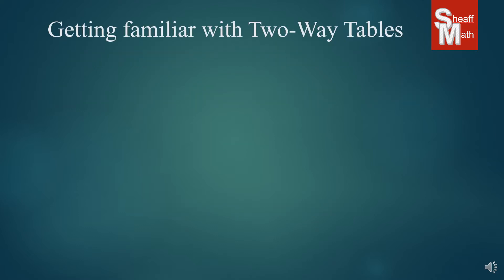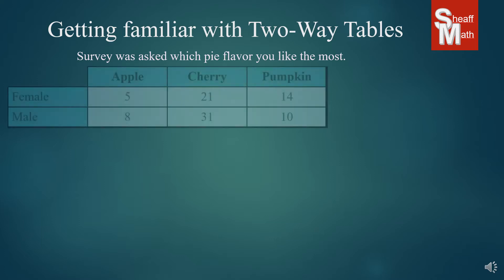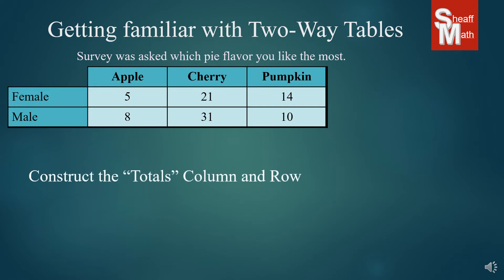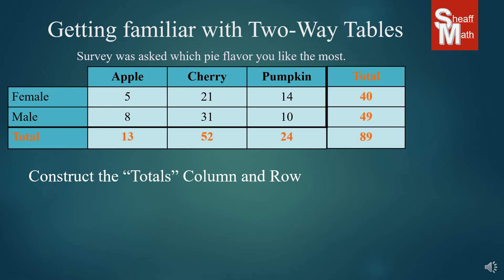So let's get familiar again with two-way tables. We have a survey that was done where people were asked which pie flavor they liked the most. Here is the two-way table. Something that I always tell my students to do before they attempt anything is to construct the totals column and row. I need you to add all of the flavors together and then all of the rows — the female and male — and then our grand total is in the bottom corner.